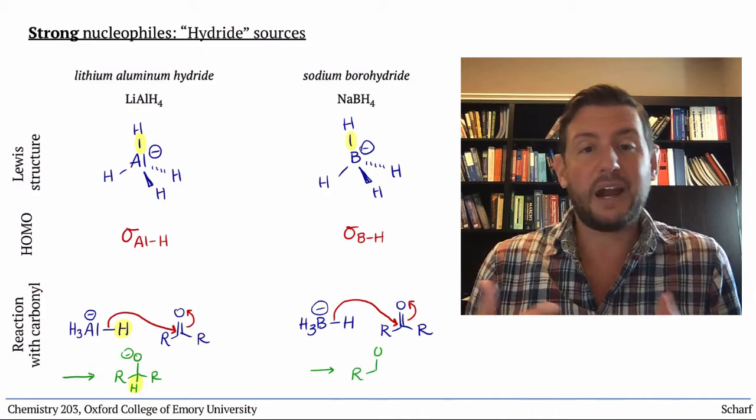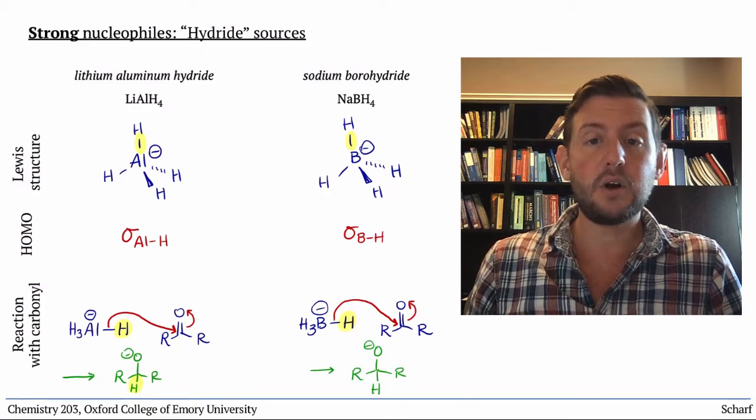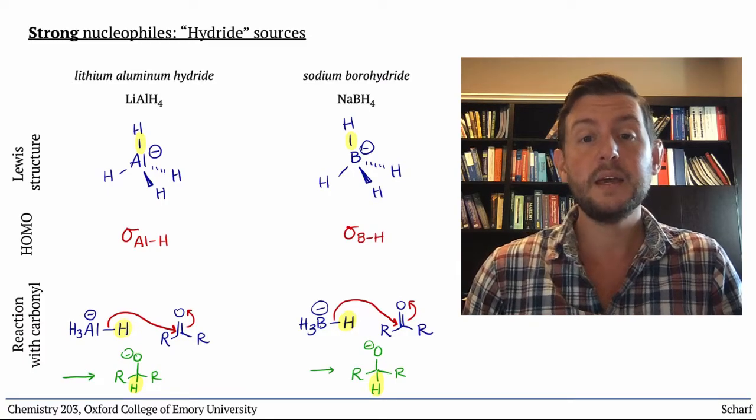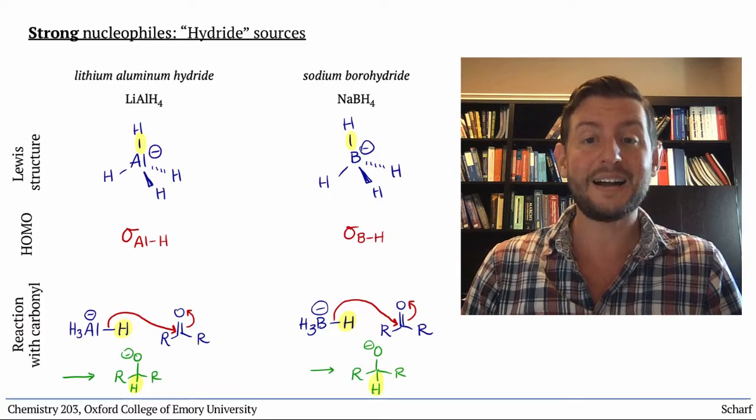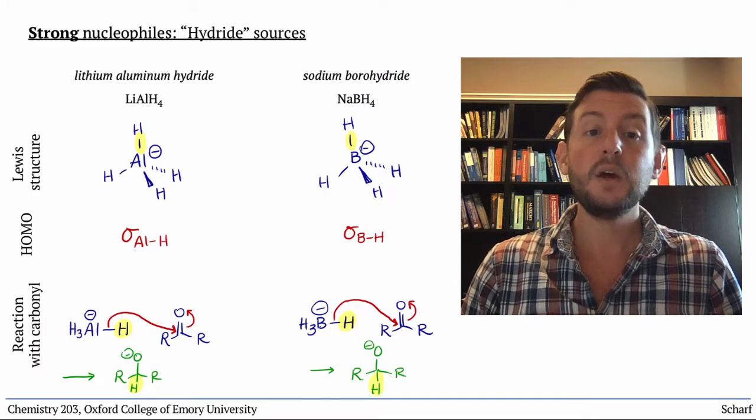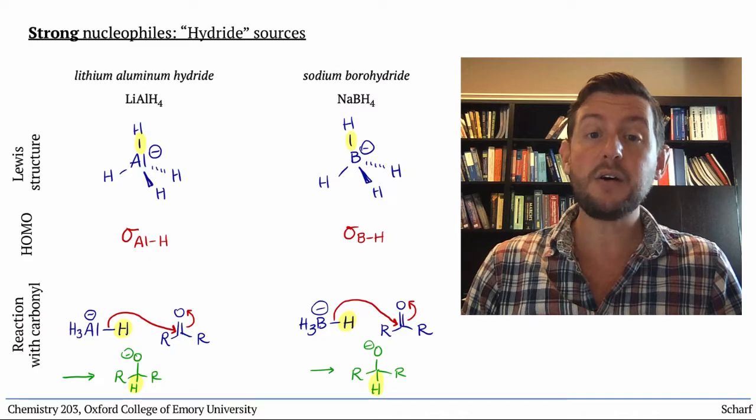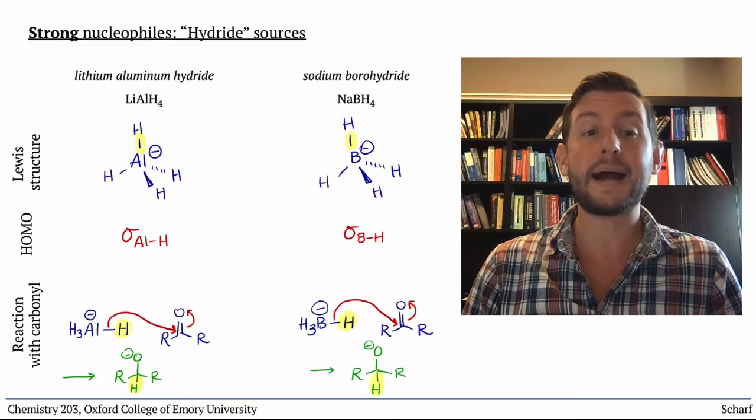Here, the electrons carry the hydrogen atom along with them as they donate into the LUMO of the carbonyl group, and we make a new carbon-hydrogen bond. We now have an alkoxide, which we can turn into an alcohol quite easily by providing it with a weak acid.